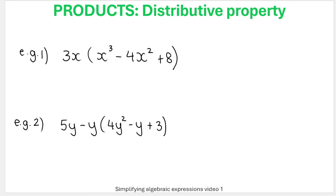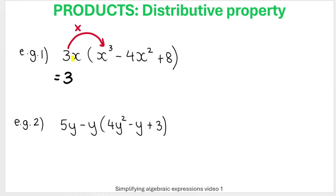In example one, I've got 3X outside the brackets and three terms inside. Remind yourself when you do the distributive property, you are multiplying. So we go 3X multiplied by X cubed. When multiplying with the same base — X and X — we add the exponents. Keep the base, add the exponents: one plus three is four.